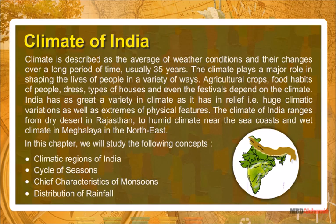India has a great variety of climate, as it has great variety in relief — with huge climatic variations as well as extremes of physical features. The climate of India ranges from dry desert in Rajasthan to humid climate near the sea coasts.